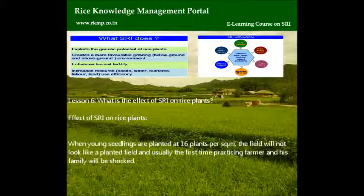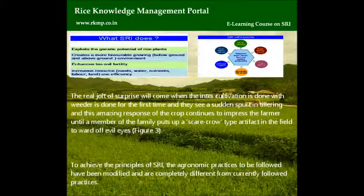Lesson 6: What is the effect of SRI on rice plants? When young seedlings are planted at 16 plants per square meter, the field will not look like a typical planted field, and usually the first-time practicing farmer and his family will be shocked. The real jolt of surprise will come when inter-cultivation is done with the weeder for the first time and they see a sudden spurt in tillering. This amazing response of the crop continues to impress the farmer until a member of the family puts up a scarecrow-type artifact in the field to ward off evil eyes. To achieve the principles of SRI, the agronomic practices to be followed have been modified and are completely different from currently followed practices.